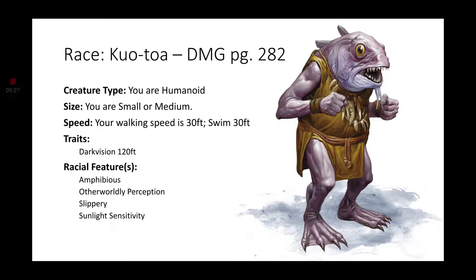First and foremost, the creature type: Kuo-toa, according to the Monster Manual, are humanoid. Their size is medium — roughly the same size as a human, but maybe a bit smaller, just slightly taller than a dwarf. Their walking speed is 30 feet and they have a swimming speed of 30 feet. For their traits, they have darkvision of 120 feet. They have amphibious — they can breathe air and water. They have otherworldly perception, which is a really cool feature: they know there's an invisible creature in the area, they don't know where it is until it starts moving, and it's still invisible, but they know that something is there.